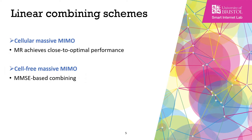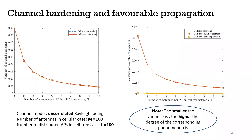After AP selection, the receive combining for user K will only consider the received data signals from its serving APs instead of all APs in the network. In cellular massive MIMO, the simple maximum ratio combining is widely adopted because it can achieve close to optimal performance. But the case is different in cell-free massive MIMO, where the effects of channel hardening and favorable propagation are not so pronounced, as shown in the next slide. These two figures compare the degree of these two effects in cellular networks and in cell-free networks.